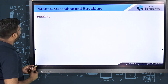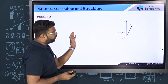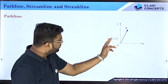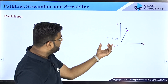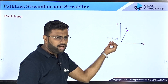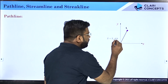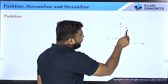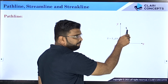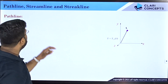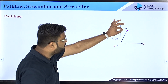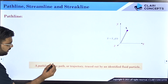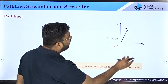Firstly, we will start discussion on pathline. Say for example, I have a fluid flow and in this fluid flow I have defined a Cartesian coordinate system x, y, and z. From this system I have identified a point A. Location A is identified by a position vector called xA. At a given instant of time t, there is a fluid particle sitting at point A. This particle is identified such that at time t, the particle has position xA. Pathline is the path or trajectory traced out by an identified fluid particle.